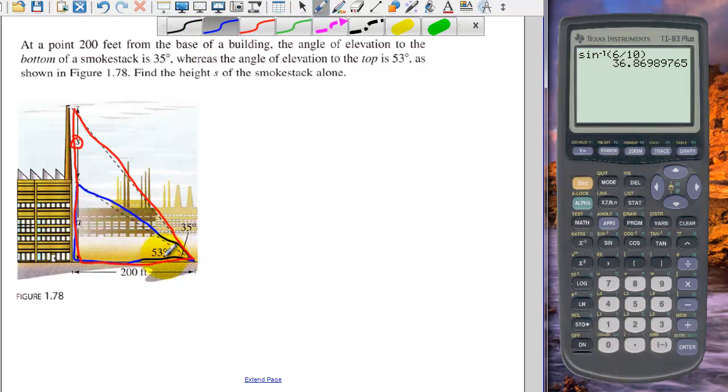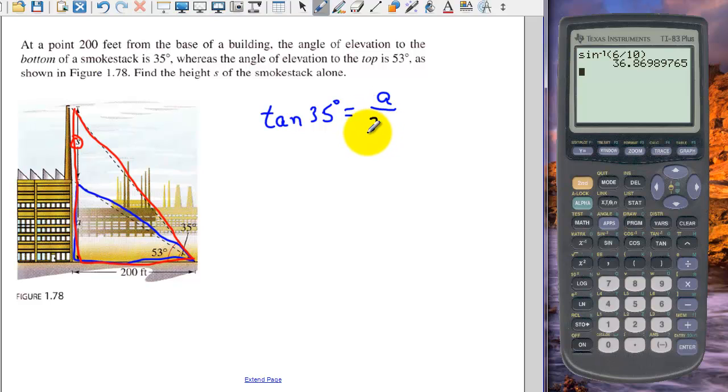So let's do the blue triangle here first. So this is 35 degrees. This is opposite, and this is adjacent. So that is a tangent function. So the tangent of 35 degrees equals A over 200. So A is 200 times the tangent of 35.